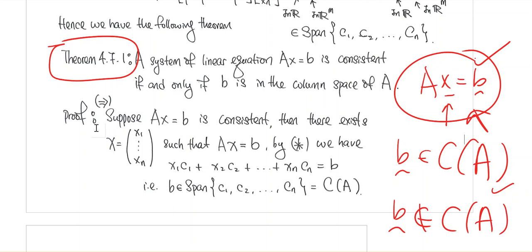So the existence of a solution depends on where b is. If b is in the column space of A, the system will have a solution. If b is not in the column space of A, the system will not have a solution. The column space of A provides this type of information.